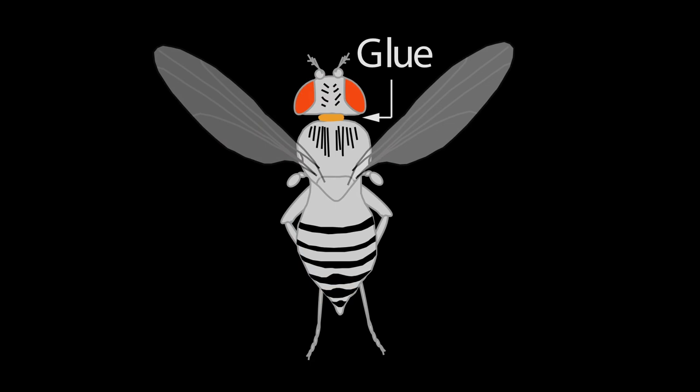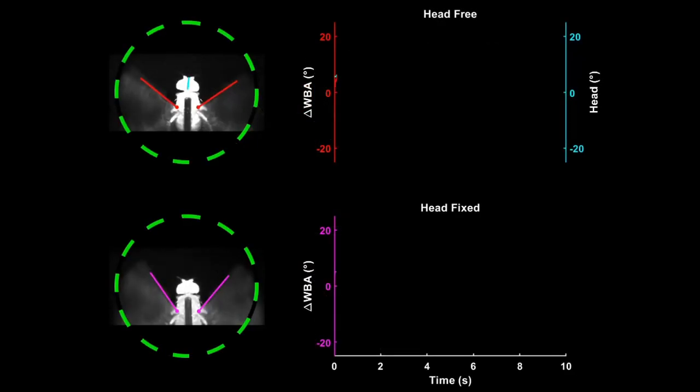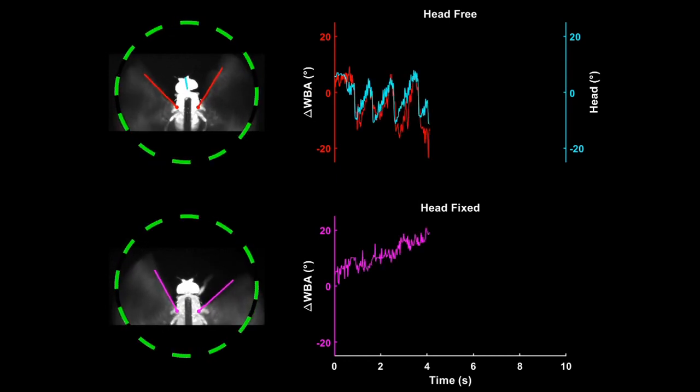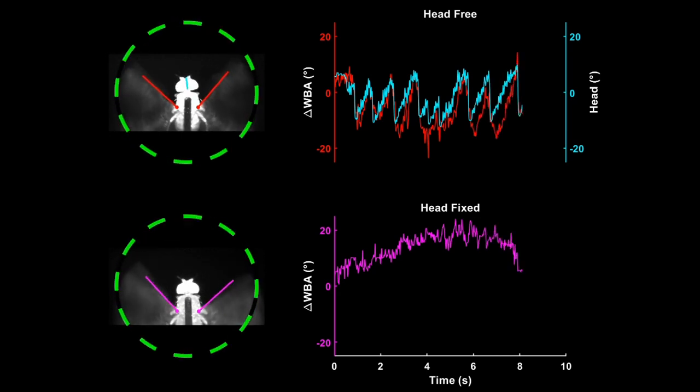Therefore, if we were to evaluate the wing reset saccade rate in head fixed flies, it would presumably be lower than that of the saccade rate in head free flies. We found that this was indeed the case, and head fixed flies performed less than half as many wing reset saccades as head free flies.